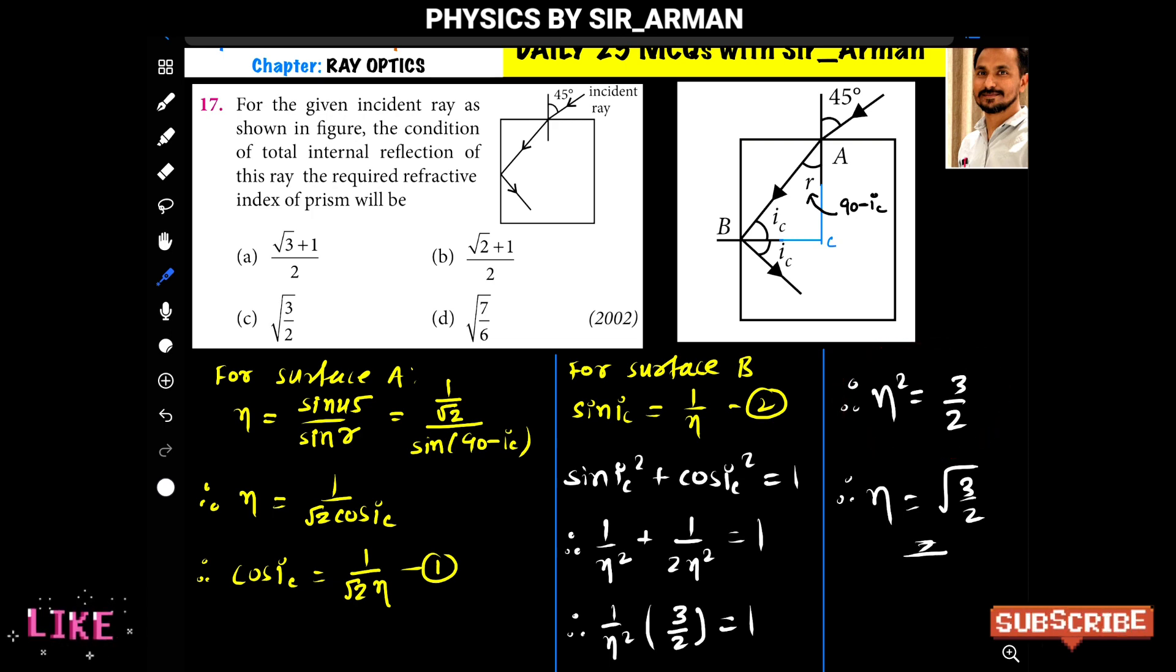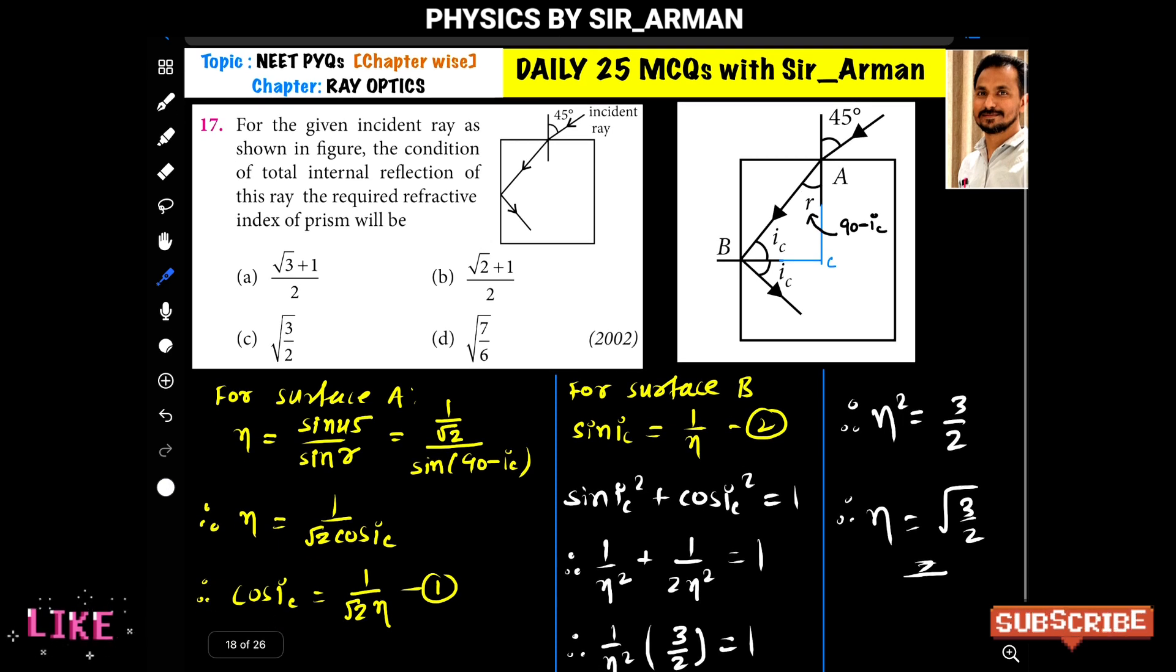So here n square or eta square equals 3 by 2. Therefore eta equals root 3 by 2. That is, the refractive index should be under root 3 by 2. Option C is correct.